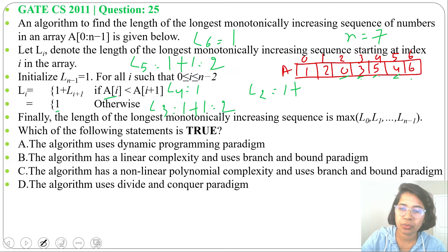Next find L_1: is 2 less than 0? No, so it will be 1. Next find L_0: is 1 less than 2? Yes, so it will be 1 plus 1 equals 2.